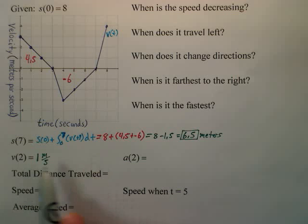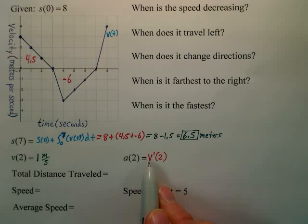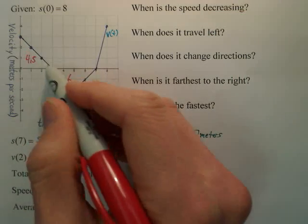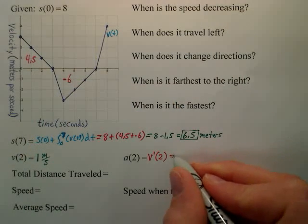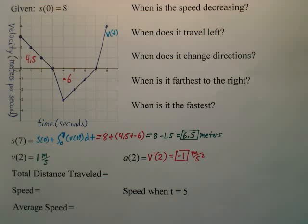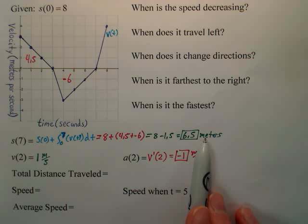If I want my acceleration, we have to realize acceleration is the derivative of velocity. So acceleration is going to be the derivative of velocity at t=2. Derivative means slope. What's the slope at 2? Down 1 over 1 — isn't that negative 1? And that would be meters per second squared for units. The reason it's meters per second squared is that when you take a derivative of meters per second, you divide by seconds again, so that's per second squared.